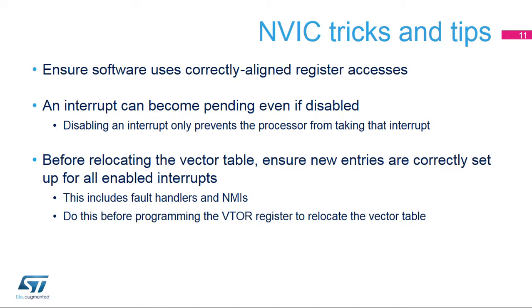When accessing the NVIC registers, ensure that your code uses a correctly aligned register access. Unaligned access is not supported for NVIC registers, as well as all memory-mapped registers located in the Cortex-M4. An interrupt becomes pending when the source asks for service. Disabling the interrupt only prevents the processor from taking that interrupt. Make sure the related interrupt flag is cleared before enabling the interrupt vector.